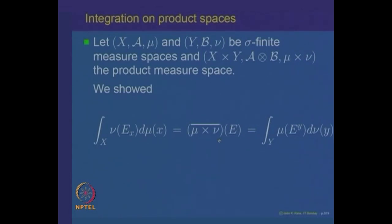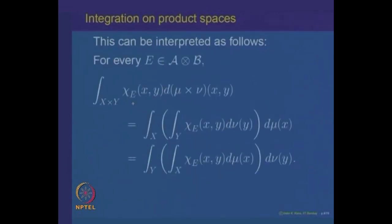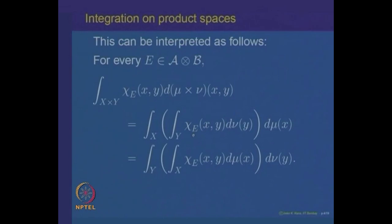We want to reinterpret this result as follows. The measure of the set E can be written as the integral of the indicator function of E with respect to the product measure. So μ×ν of E is nothing but the integral of the indicator function of E. On the other hand, the x-sections or y-sections are nothing but indicator functions of E again. When you integrate with respect to y, that means you are fixing x and looking at the section of E at x. So ν(E_x) is the integral over Y of the indicator function of E with respect to the variable y.